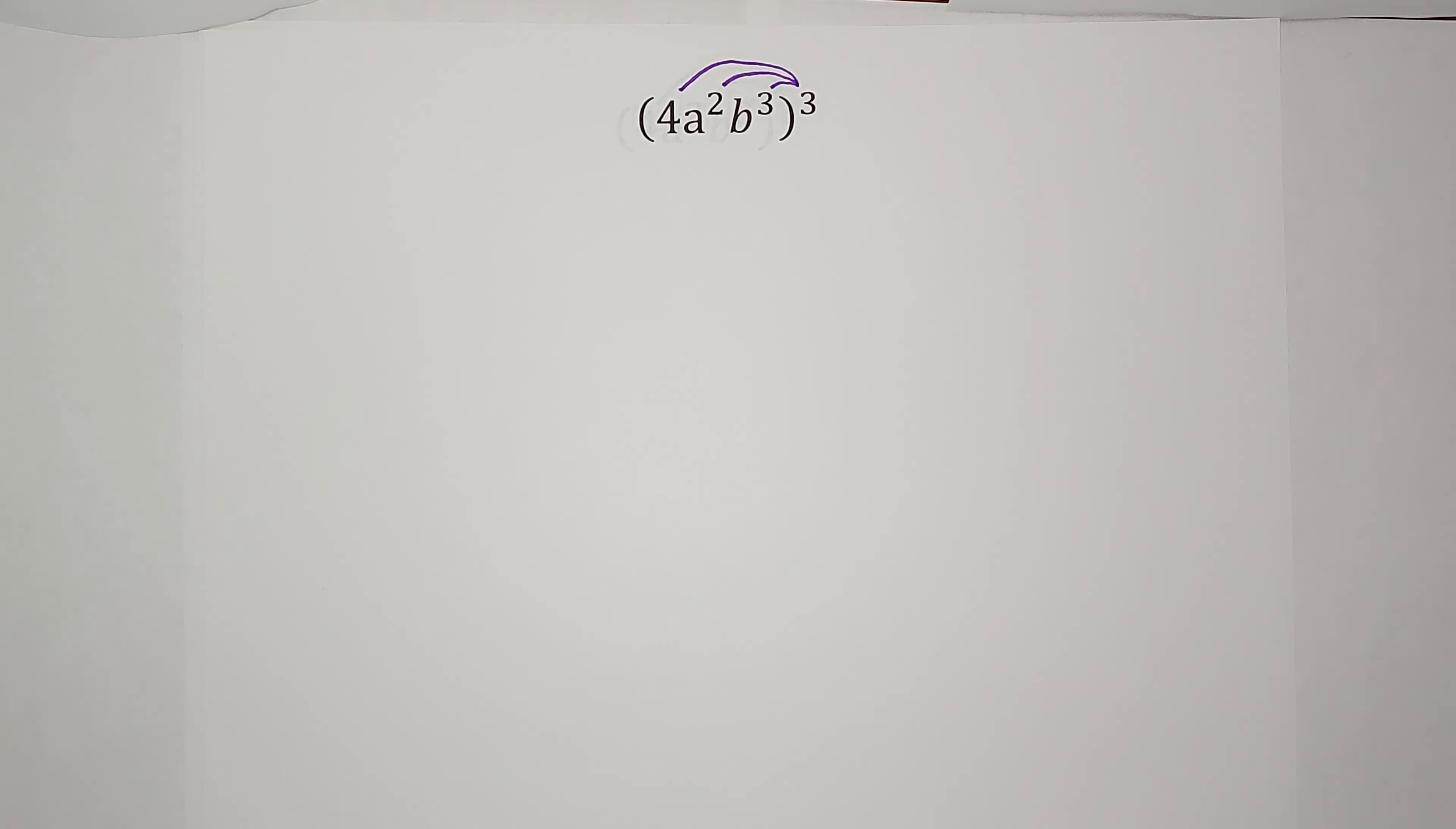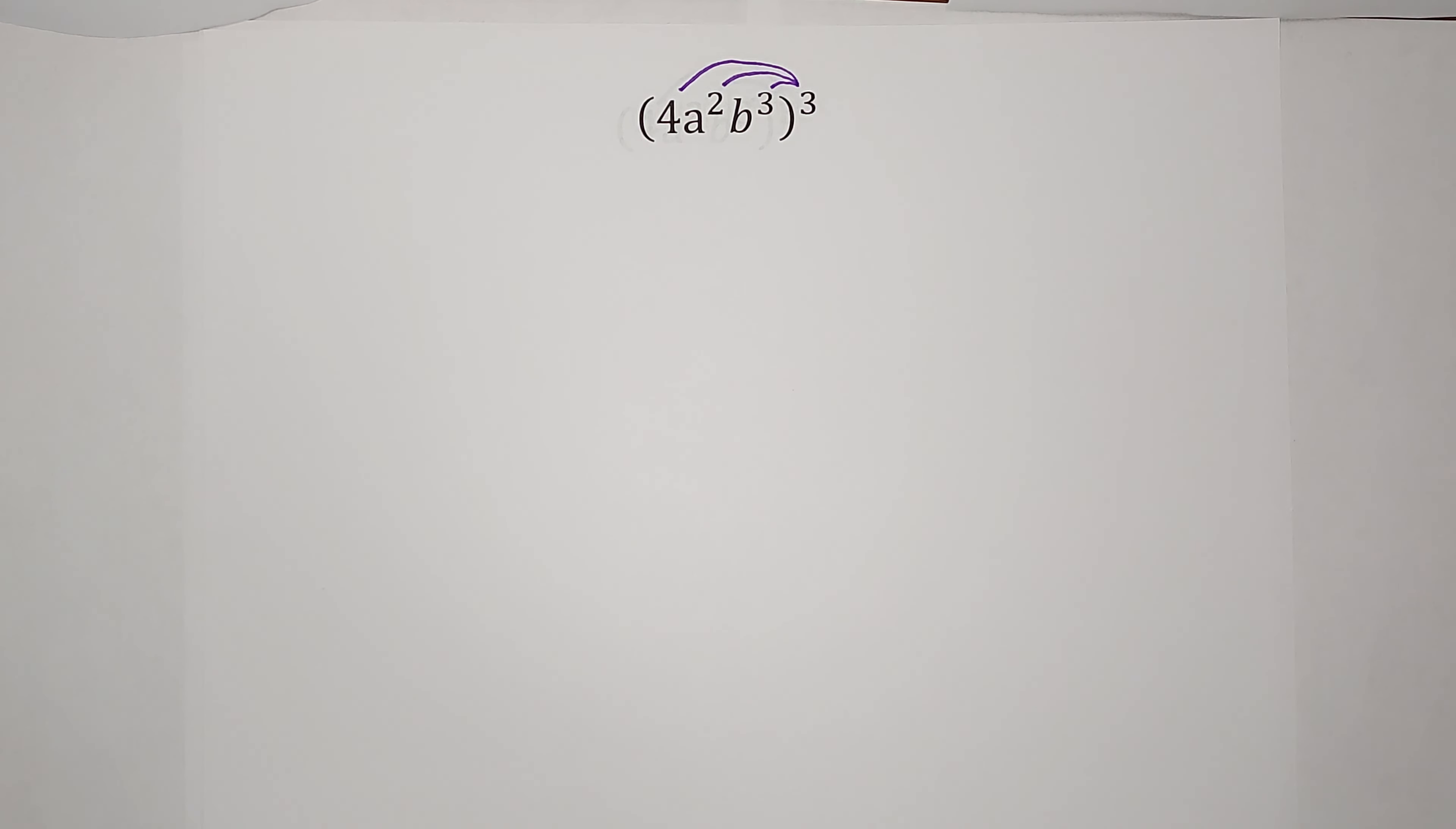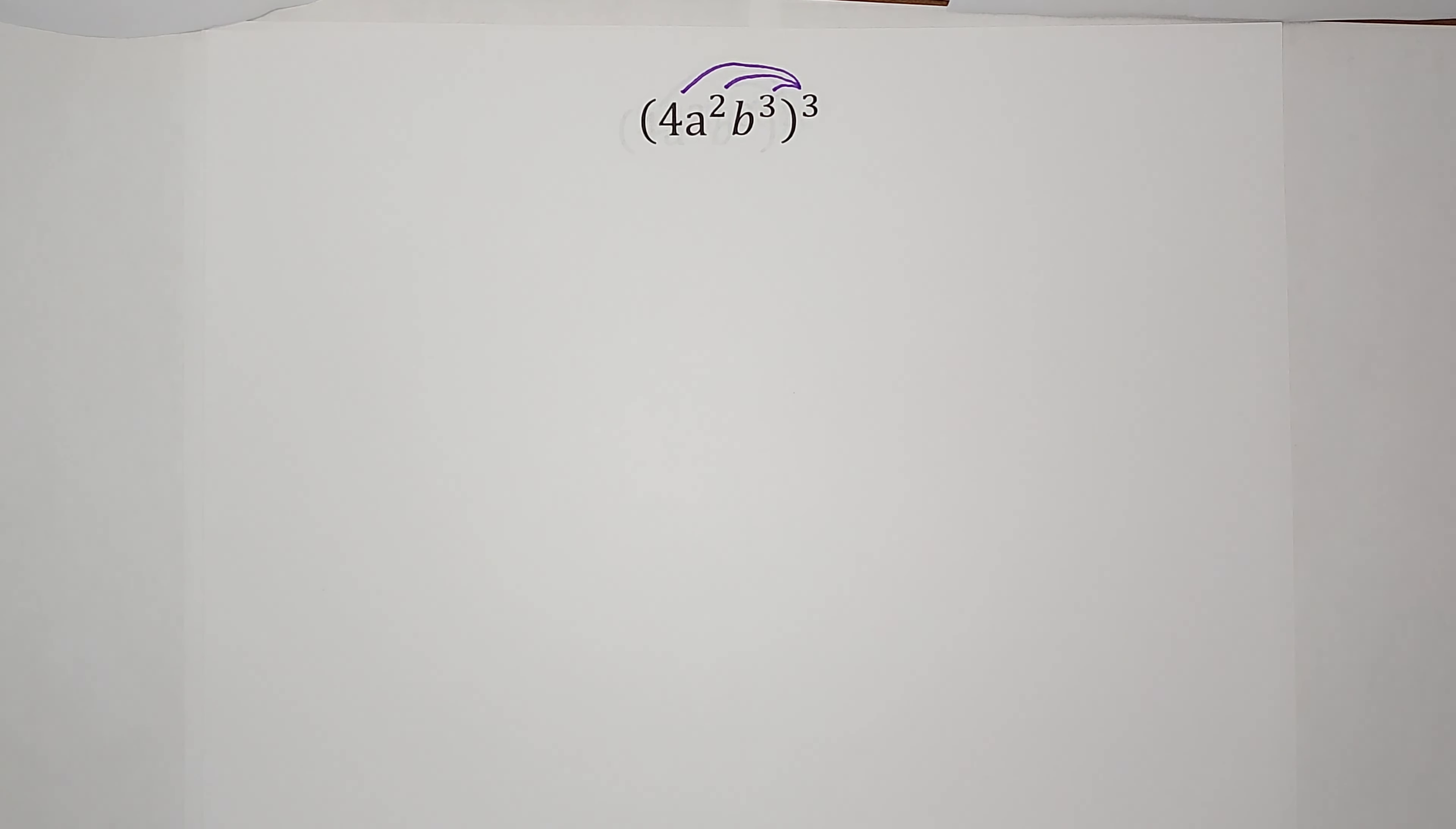We can distribute that third power in. When I multiply this in, it's a power to a power. When I do a power to a power, you multiply the exponents. You might be saying, well, four doesn't have an exponent. If something doesn't have an exponent, it just has an exponent of one.